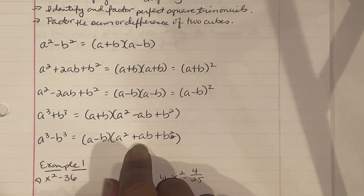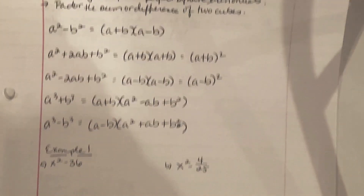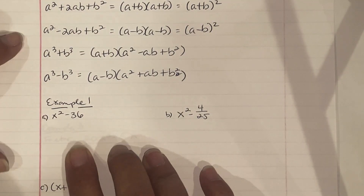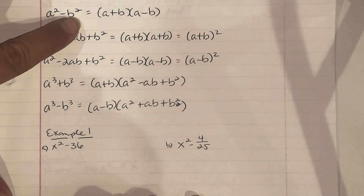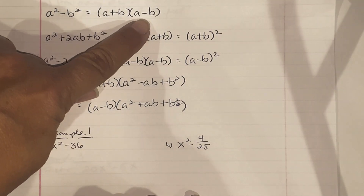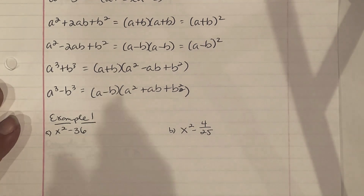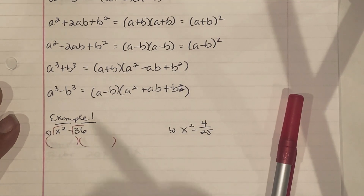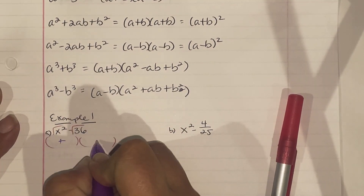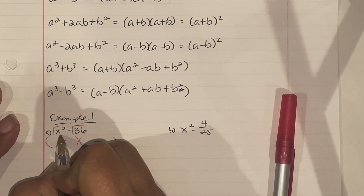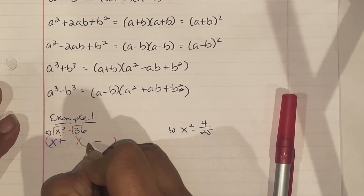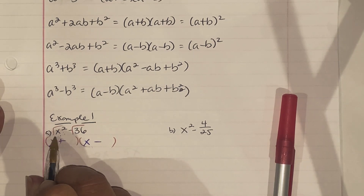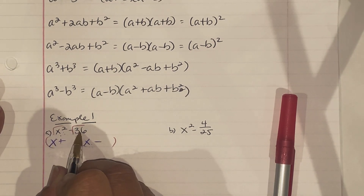Example 1a: x squared minus 36. This follows the difference of squares pattern, which breaks down into a plus b times a minus b. We take the square root of both pieces and write plus and minus. For x squared, a power of 2 splits into two x's. Square root of 36 is 6, so we write positive 6 and negative 6. The answer is x plus 6 times x minus 6.